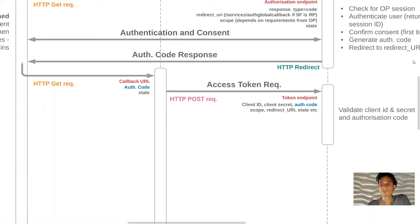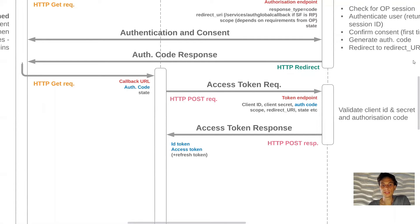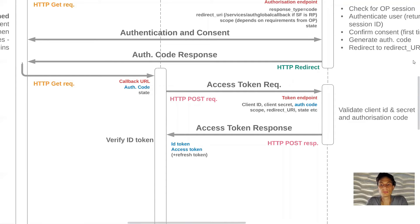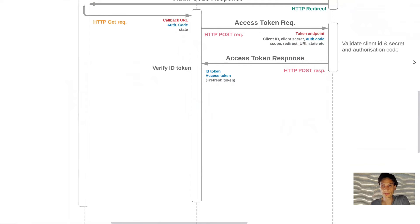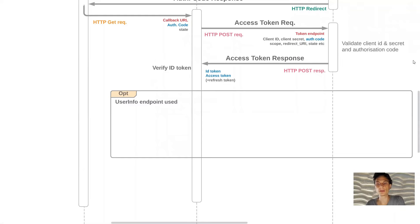The OpenID Connect provider validates the client ID, client secret, and authorization code, checks that they're all valid, and assuming they are, responds with the access token response and also the ID token, presuming the ID token scope has been requested. The relying party can then verify that ID token. The ID token already includes a lot that's useful for sign-on - standard attributes around email address, username, and that kind of thing are all included.